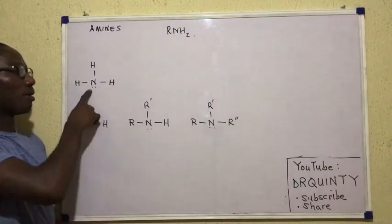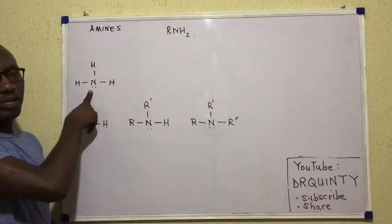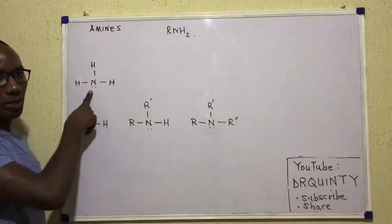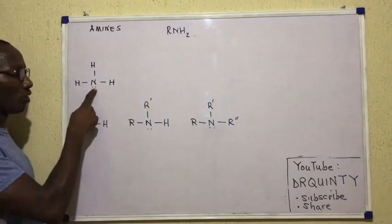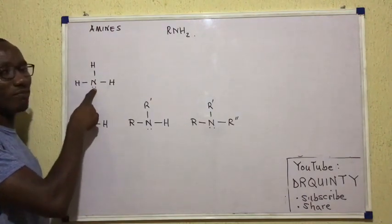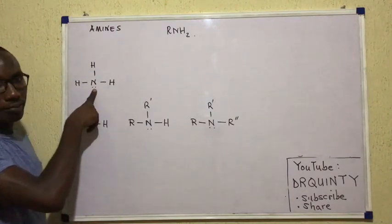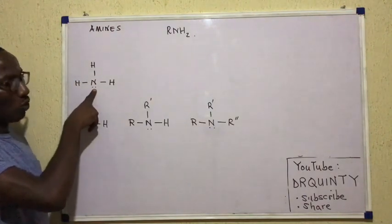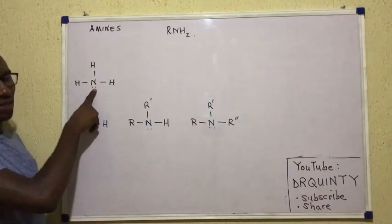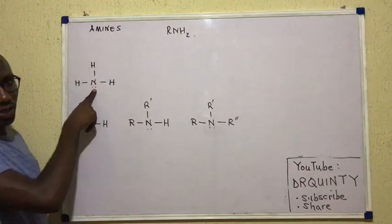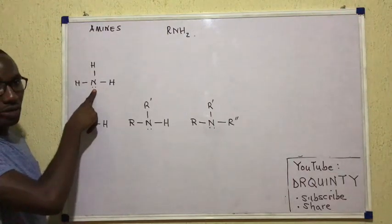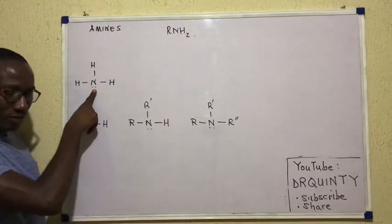Now here's ammonia. Ammonia is NH3 and of course right there we have a lone pair. The lone pair present on the nitrogen is what makes ammonia a base, of course.